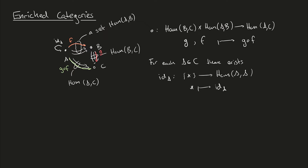We are now able to reformulate the usual definition for a normal category as follows: we want a collection of objects, and for each pair of objects we want a hom set. Moreover, for each triple of objects we want a composition function which goes between the cartesian product of the corresponding hom sets to the third hom set. Finally, we want a special map for each object that picks out the identity within the corresponding hom sets. This is a way to give the data for a category.